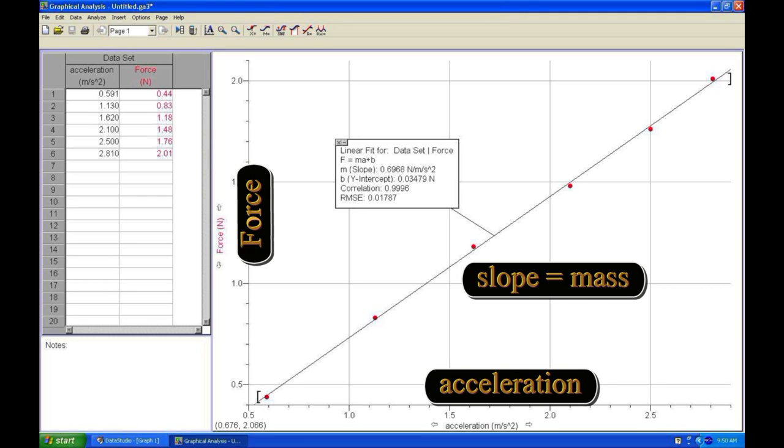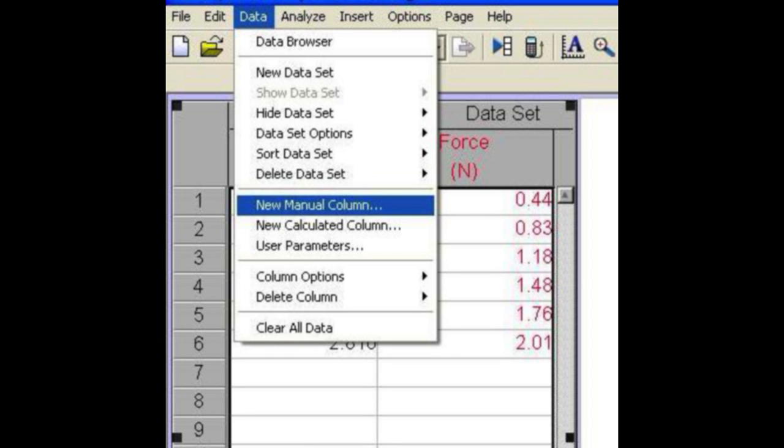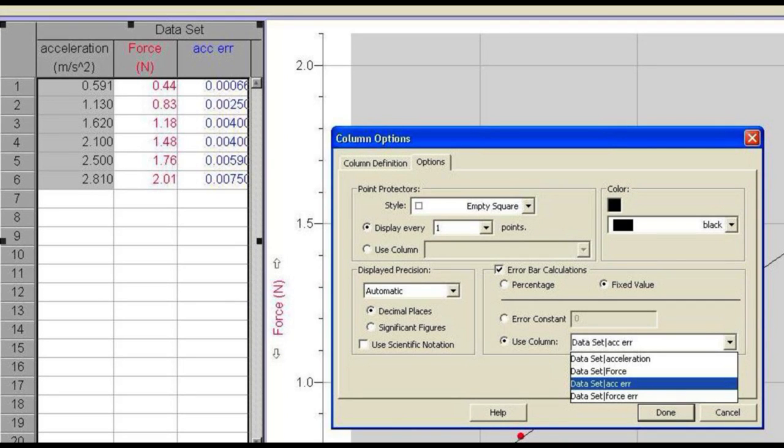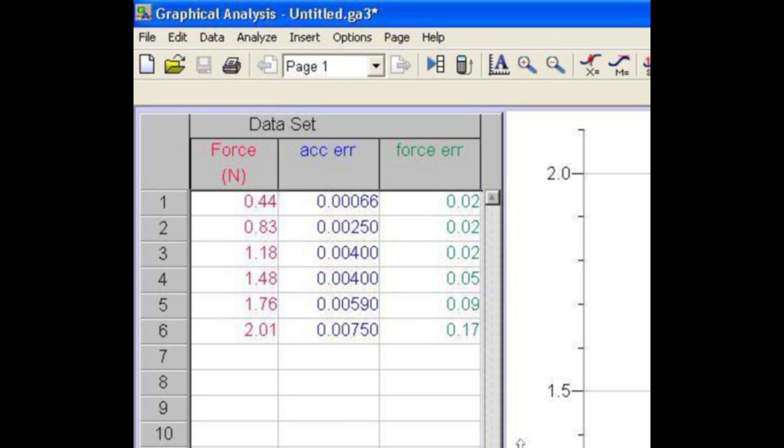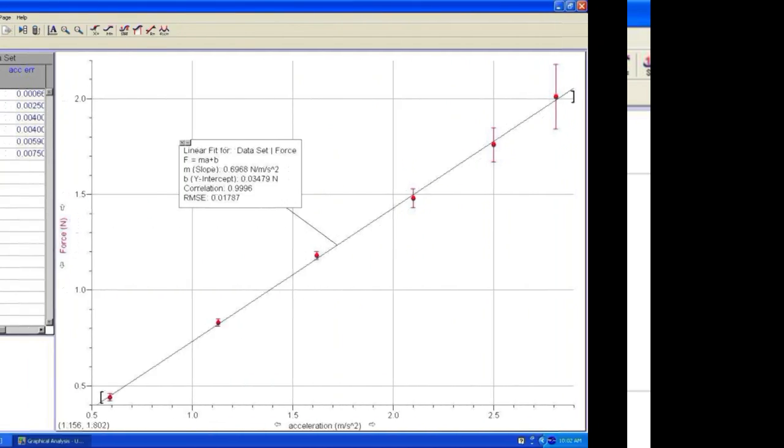Let's add error bars to our plot. From the data menu, add a new manual column and input your acceleration errors. Revisit the x column definition by double-clicking on the title for acceleration, and indicate that errors in x values will be taken from the acceleration error column. Repeat this process to include a column of errors in your force measurements, noted as standard deviations, and change the definition of the force column to include errors from the appropriate column. Now your graph of force versus acceleration includes error bars. Does the best fit straight line fall within the error bars? Which is the larger source of error in this experiment: force or acceleration measurements?